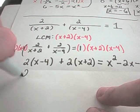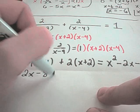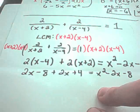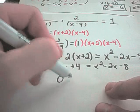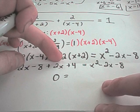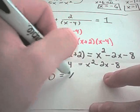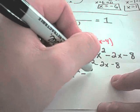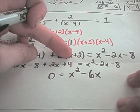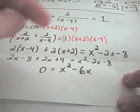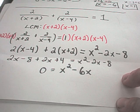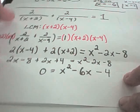Multiplying out the left side gives 2x minus 8 plus 2x plus 4 equals x squared minus 2x minus 8. This is a quadratic equation. Making the left side equal to 0: adding 2x and 2x gives positive 4x, subtracting from the right gives negative 6x. On the left, negative 8 plus 4 is negative 4, so adding 4 to both sides gives negative 4 on the right.